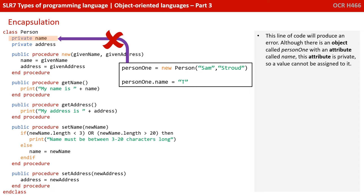Now, this line of code — person1.name equals T — is going to produce an error. Although there is an object called person1 and it has an attribute called name, this attribute is private. So you can't simply assign a value to it with a line of code such as that shown.